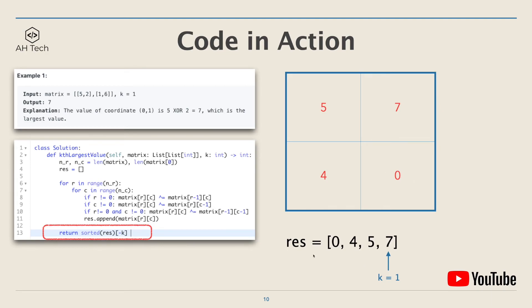At the end, we will sort res, and then the first largest value in res is 7, which is the output for example 1. The second, third, and fourth largest values in res are 5, 4, 0, which are the outputs for the other examples. This concludes the algorithm.